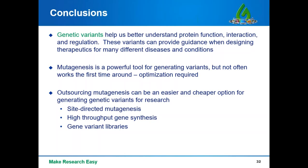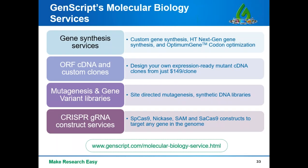To wrap up, here are a few main conclusions. Gene variants are very powerful — they help us better understand gene and protein function, interaction, and regulation. Variants can also provide guidance and insight when designing therapeutics for many different diseases and conditions. Mutagenesis methods are powerful tools for generating variants, but like most experiments they rarely work perfectly the first time around. Hopefully the information presented today can help you with some troubleshooting. And finally, if you don't want to optimize anymore, outsourcing mutagenesis can be a much easier and potentially cheaper option.